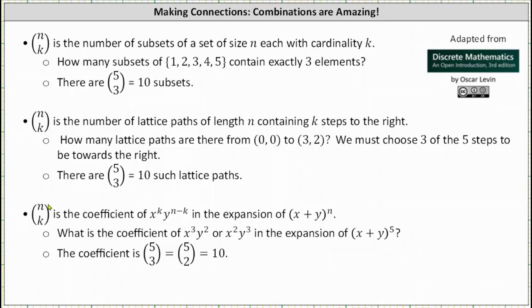And then finally, n choose k is the coefficient of x to the power of k, y to the power of n minus k, in the expansion of the nth power of x plus y. As an example, what is the coefficient of x cubed y squared or x squared y cubed in the expansion of the fifth power of x plus y? The coefficient is equal to five choose three, which is also equal to five choose two, which is ten.